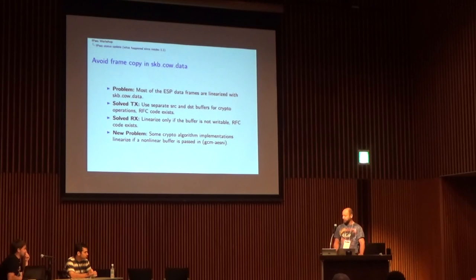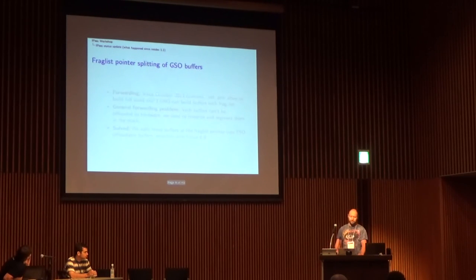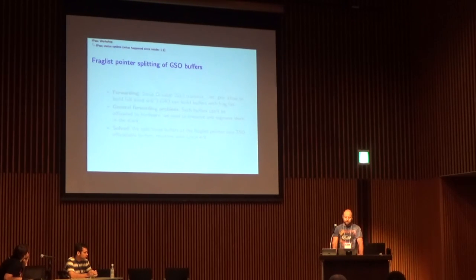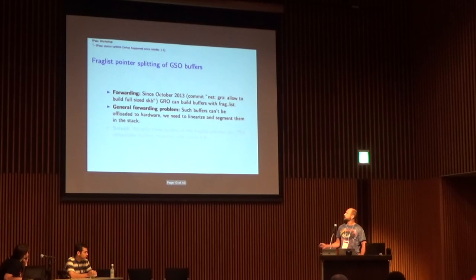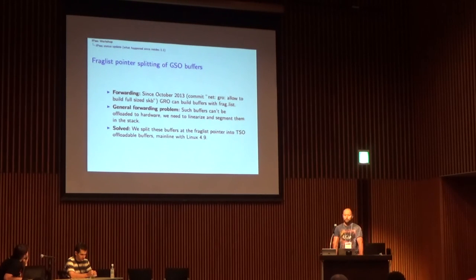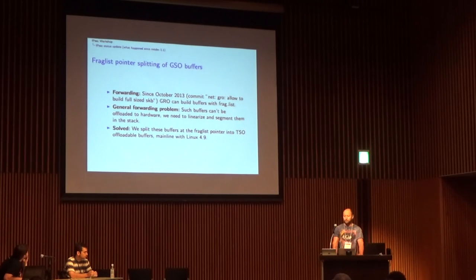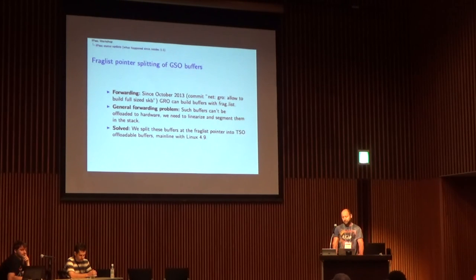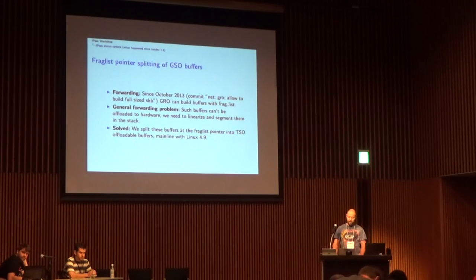So that's the status on copy-on-write. Next is what I call the frag-pointer splitting for GSO buffers. GRO can build buffers with fraglist, and this leads to a general forwarding problem because we cannot offload such buffers to hardware — they have to be fully linearized in the stack. This was solved recently: we just split these buffers at a fraglist pointer into GSO-offloadable buffers. It's mainline with the next kernel version, so we're done here.